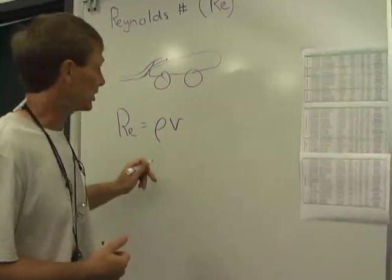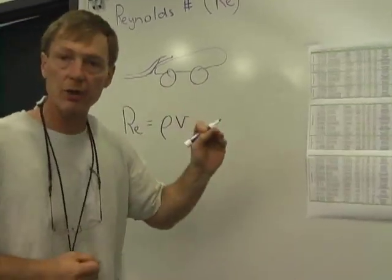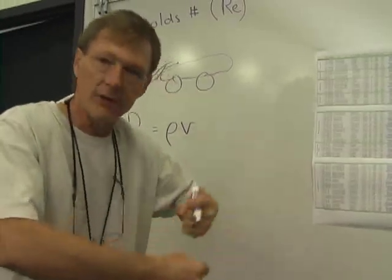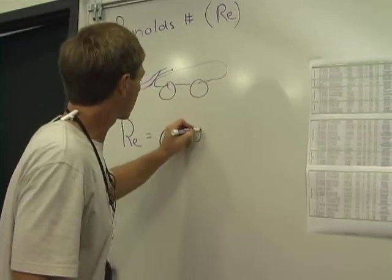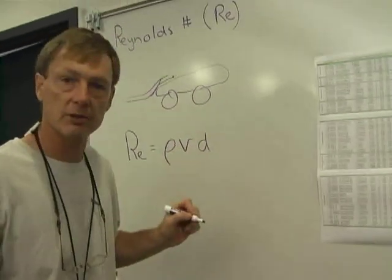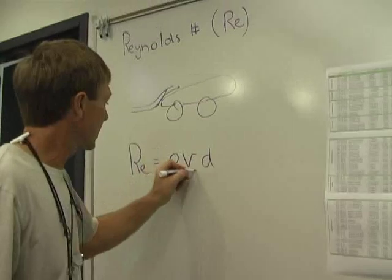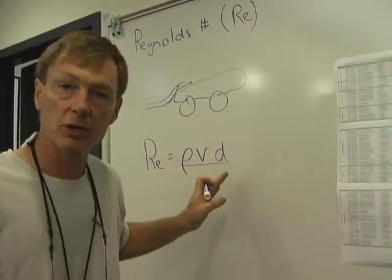So Reynolds number is a product on top of the things that drive the turbulence: the density. The more dense it is, the more likely it is to go turbulent. Density and velocity. And finally, the longer it flows, the more time it has to develop turbulence. So there's a characteristic length or size for turbulence to develop. All those go into making flow turbulent.